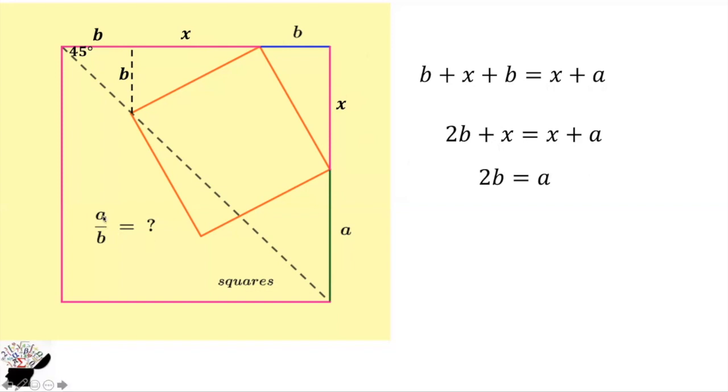Now we are supposed to find A divided by B. So now we divide both sides of the equation by B. And the answer is 2. So A divided by B is 2. And that is the answer.